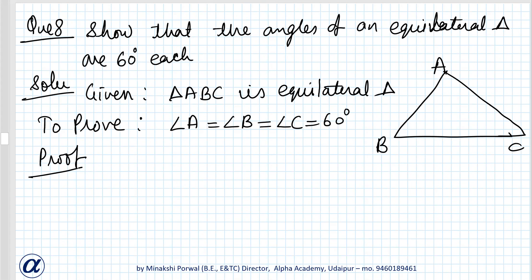If ABC is equilateral triangle, it means that AB equals BC equals CA. So in triangle ABC, AB equals AC. If AB and AC are equal, angles opposite to them will be equal.